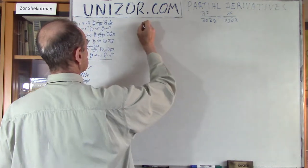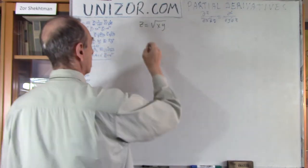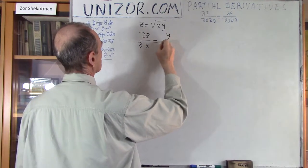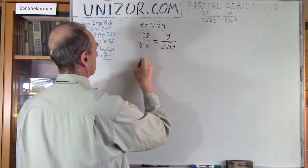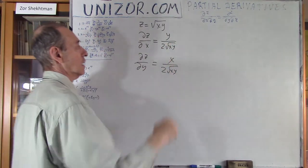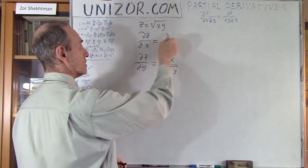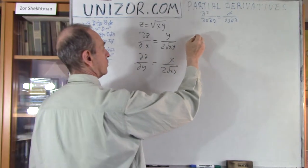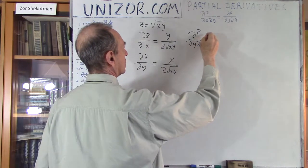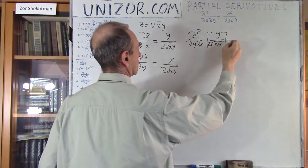My first function: using the results of the previous lecture, dz/dx is equal to y divided by 2 times the square root of xy, and dz/dy is equal to x divided by 2 times the square root of xy. Now I will take the second derivative of dz/dx, but now by y — that is, d²/dydx of y divided by 2 times the square root of xy. Let's calculate what this is.